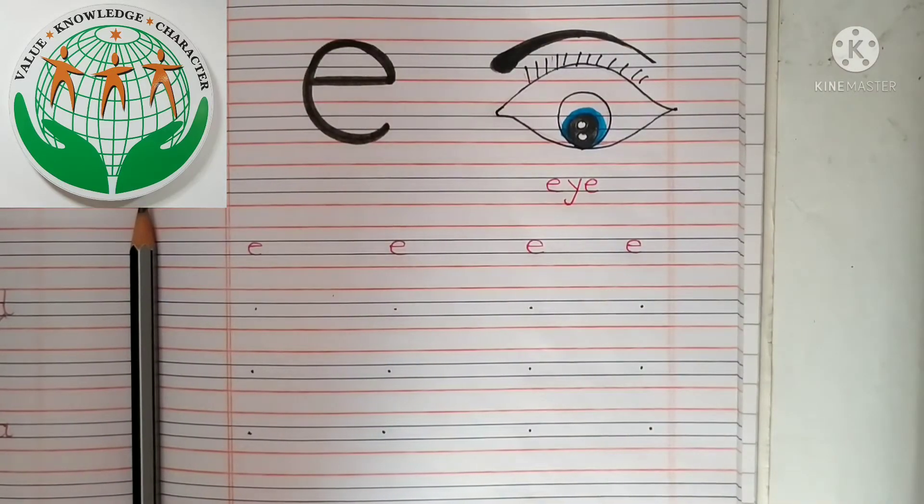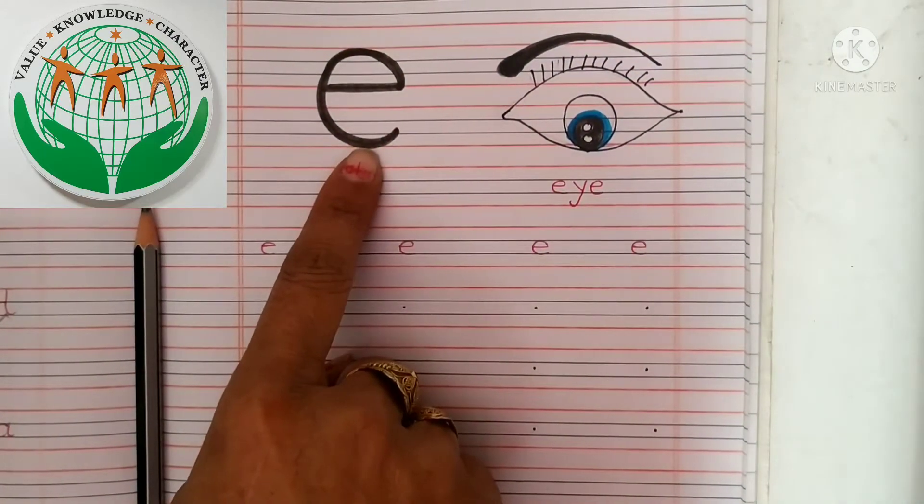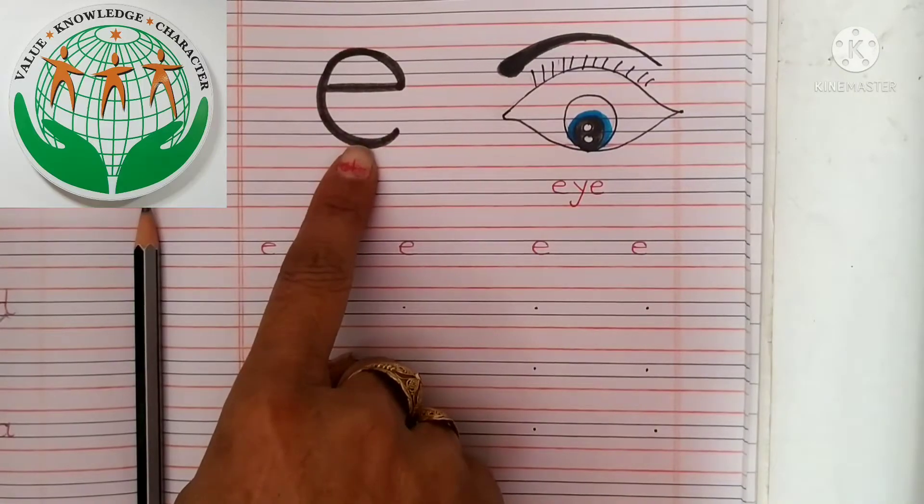Kids, in today's class we are going to write small e. Ye kong se letter likna? Ye hai small e, baby e.